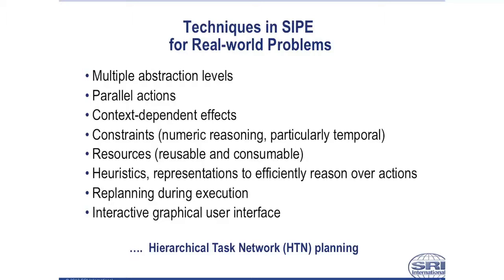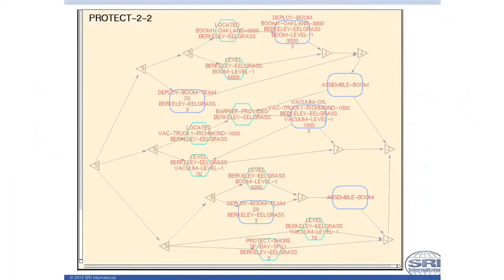In real-world problems, plans never execute as expected, so you want to re-plan during execution to fix the plan. Many AI planners never addressed that problem. And finally, we found a need for an interactive graphical user interface. SIPE had perhaps the most advanced GUI in AI planning in the 80s and 90s. Interacting with people is a critical aspect of real-world planning. Realistic problems are embedded in the world and aren't precisely defined — they have fuzzy edges. The person almost always knows information the planner doesn't and can use that to help make good choices. Another important reason to have the GUI is that it helps the user understand the plan. A large plan full of primitive actions can be very difficult to understand, and the ability to use abstraction levels in the GUI and drill down to see network displays is very crucial.